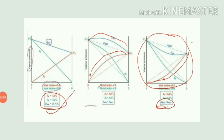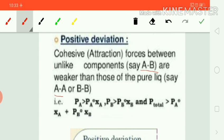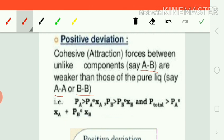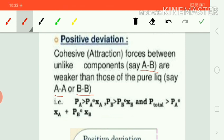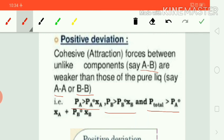In the case of positive deviations, the interactions in the solution are less than the interactions in the pure form — AB interactions are less than AA or BB interactions. This means AB particles easily escape from the solution. Compared to the pure form, the vapor pressure of components in the solution phase is greater than in the pure form. Here PA is greater than PA°·XA and PB is greater than PB°·XB, so P_total is greater than PA plus PB.